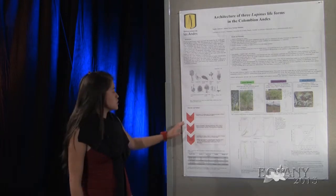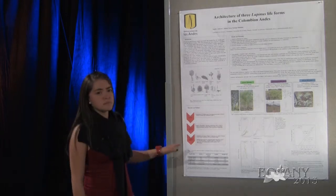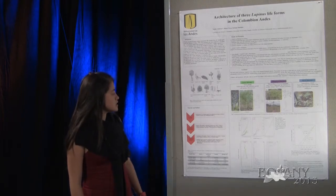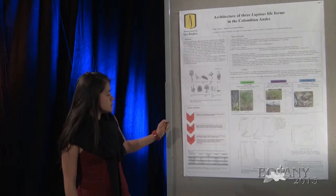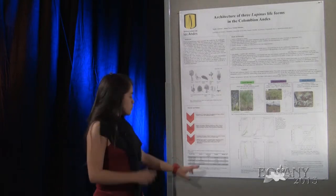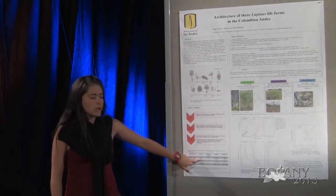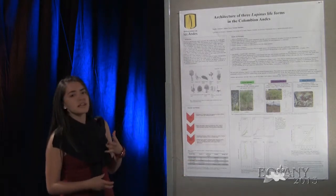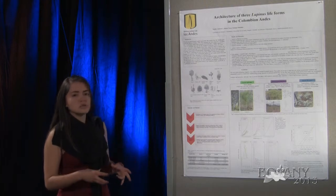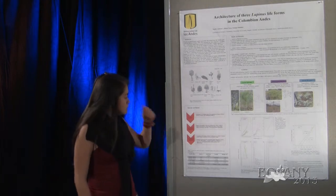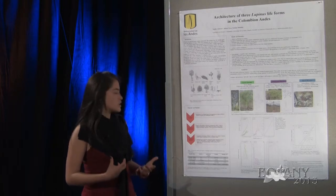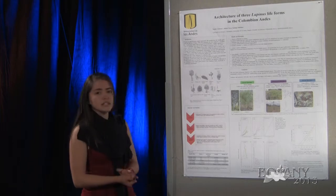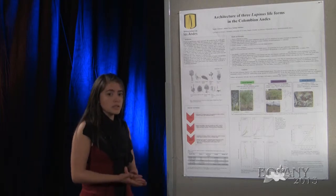What we did was first sampling individuals from five species in the Colombian Andes. The species were species one, species two, Lupinus mutabilis, Lupinus tricontensis, and Lupinus alopecuroides. Then we grouped those species into growth forms according to some previous classifications, and the architectural analysis was divided into a qualitative part and a quantitative part.